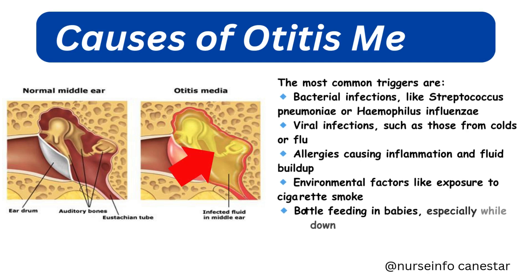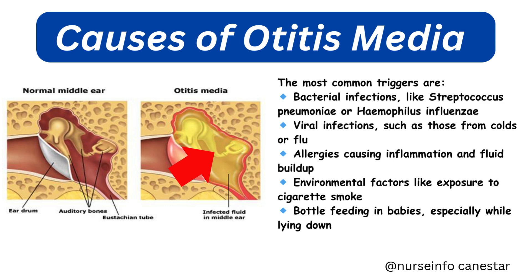So what causes otitis media? The most common triggers are bacterial infections like Streptococcus pneumoniae or Haemophilus influenzae, viral infections such as those from colds or flu, allergies causing inflammation and fluid buildup, and environmental factors like exposure to cigarette smoke or bottle feeding babies while lying down. Children are more prone because their eustachian tubes are shorter, more horizontal, and narrower than those of adults, making it easier for germs to travel and for the tubes to get blocked.